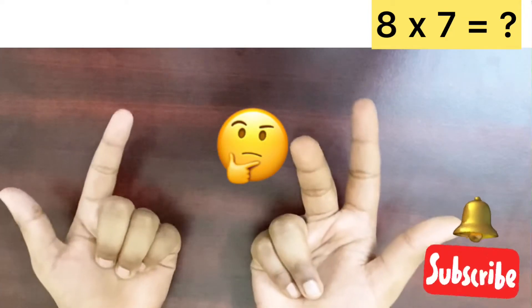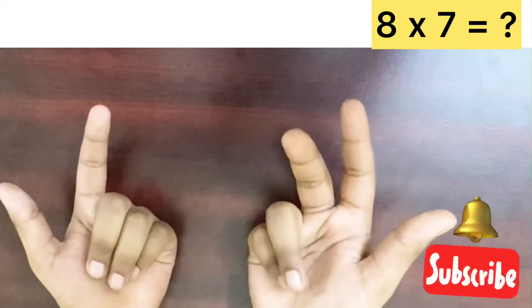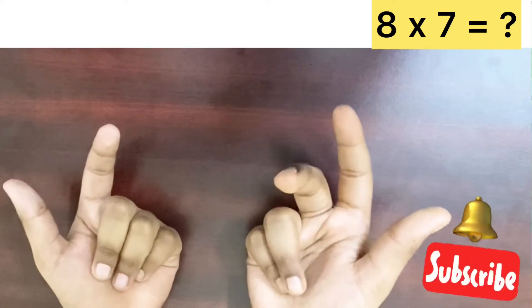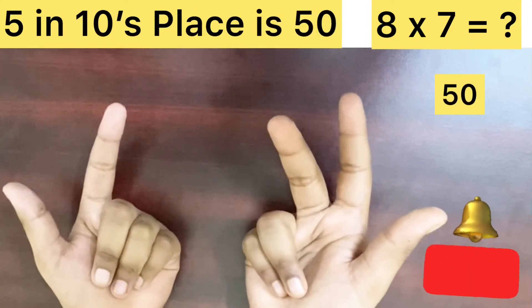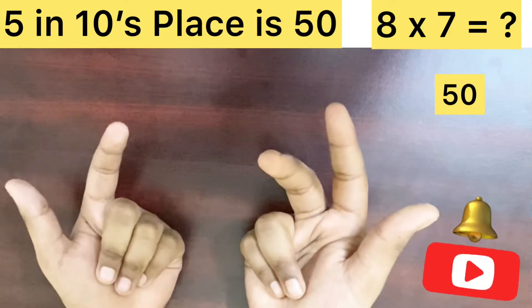Here's how. Count the folded fingers from both of your hands together. Here that is 5. Keep the 5 in 10's place. So, it is 50.